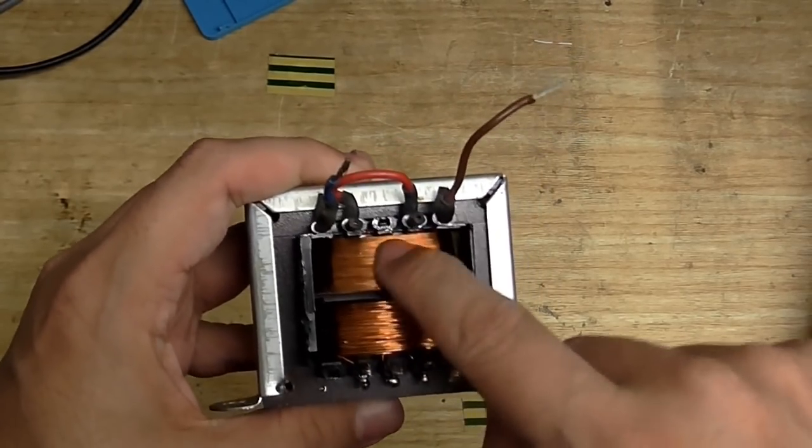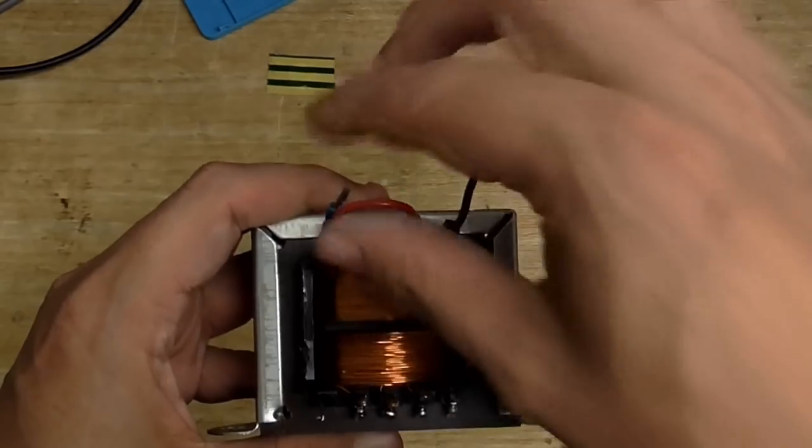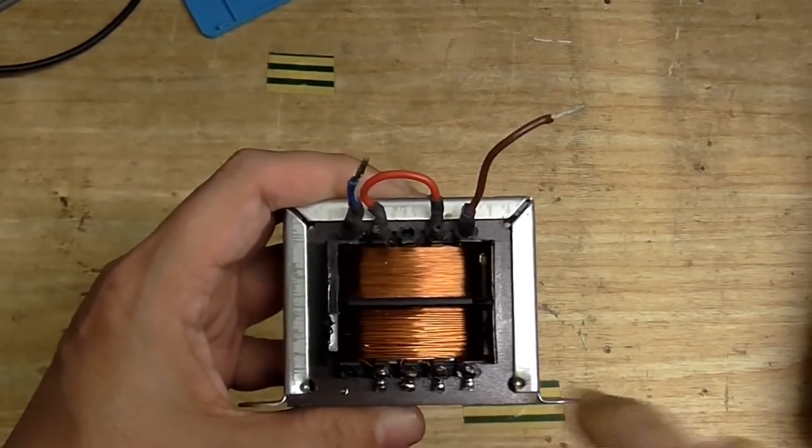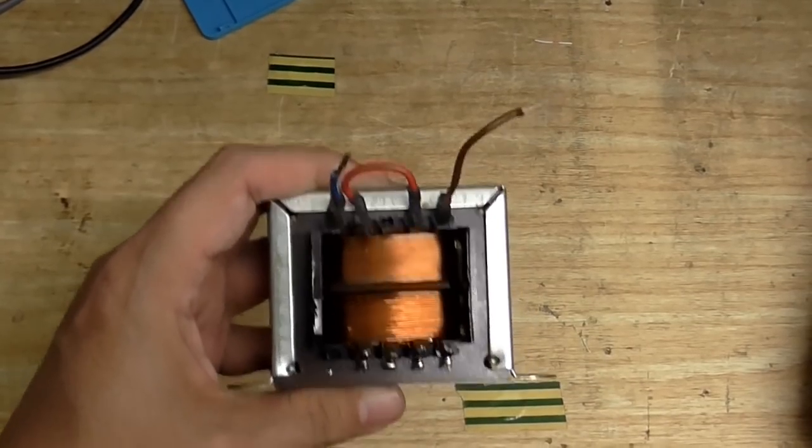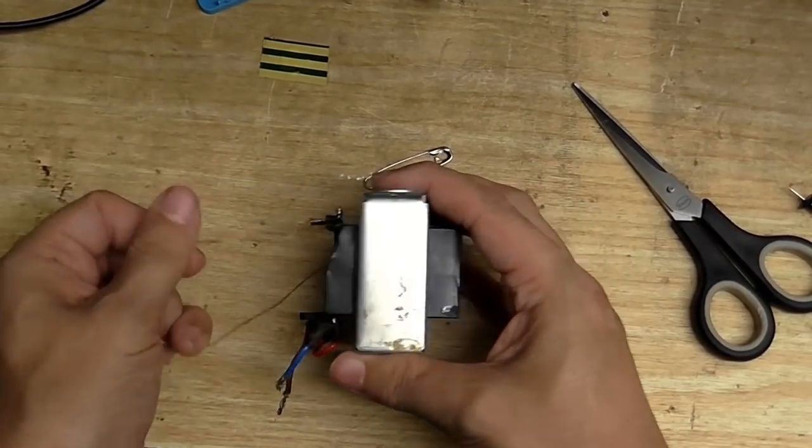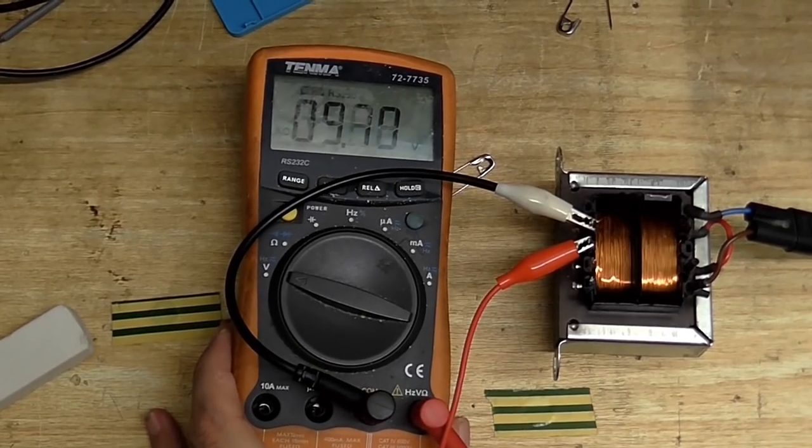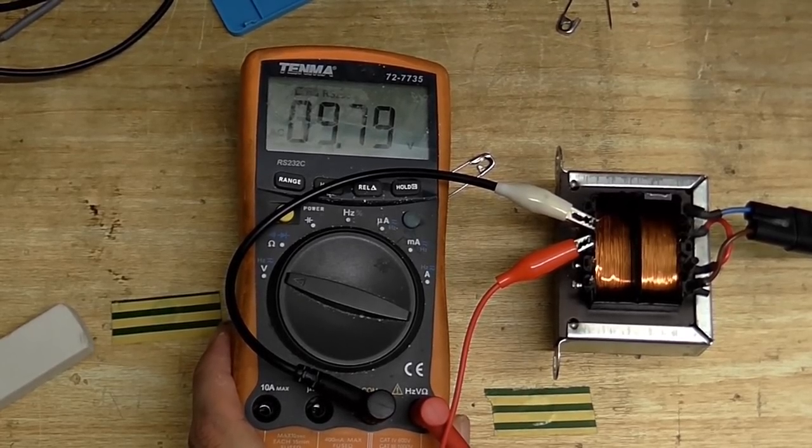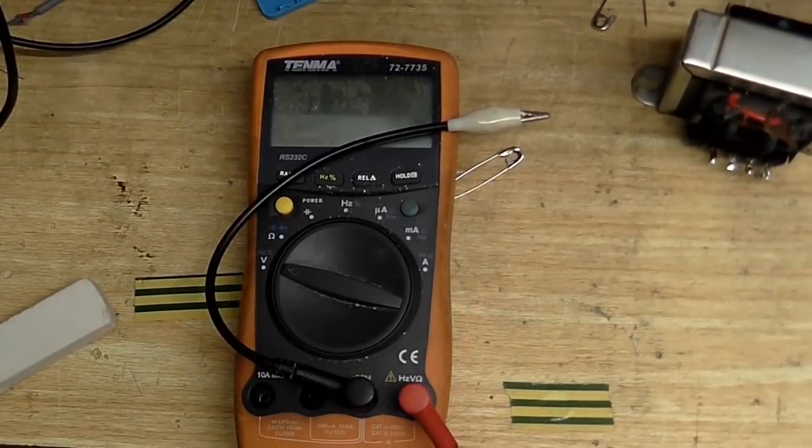So I think what we need to do, we need to try something else. So what I'm going to do is I'm going to unwind this secondary until it gets down to 9 volts. And then I think we'll have our ideal transformer. So many turns of the secondary removed later and we've got our ideal voltage. I mean turns ratio. So that's done. Guess now I've got to rewire this thing.